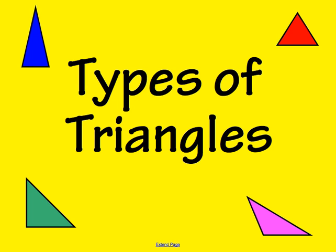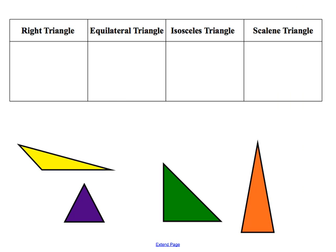In this video, we'll be learning about the different types of triangles. There are four different types of triangles we'll be working with: the right triangle, the equilateral triangle, the isosceles triangle, and the scalene triangle.